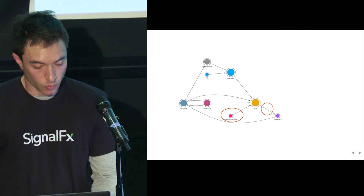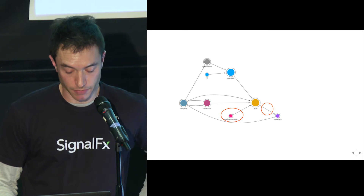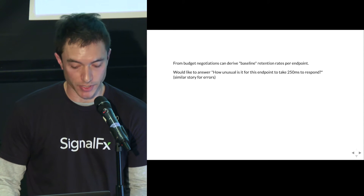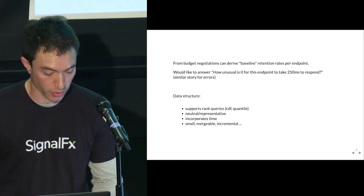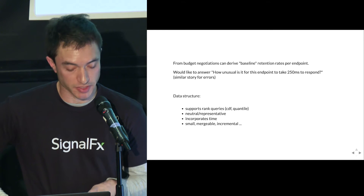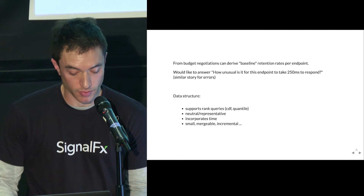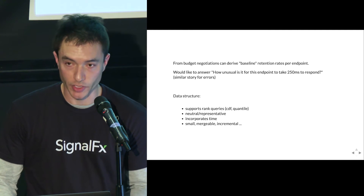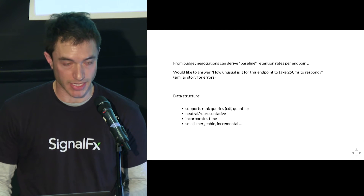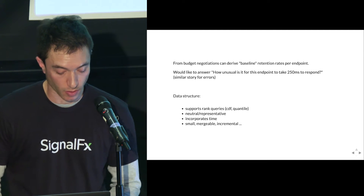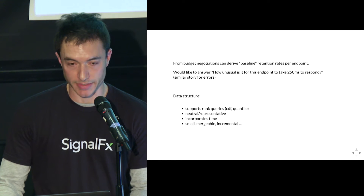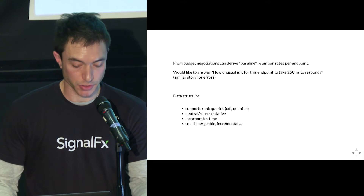To show a preference for traces and spans that took longer than expected, we need to answer questions like: how unusual is it for this operation to take 250 milliseconds to respond? This demands a ranking data structure — one that can support CDF or quantile type queries. It should be neutral and representative, reflecting the correct values of the overall population. Ideally it would have a sense of time via exponential weighting, be as small as possible, be mergeable across machines, and operate incrementally one data point at a time.